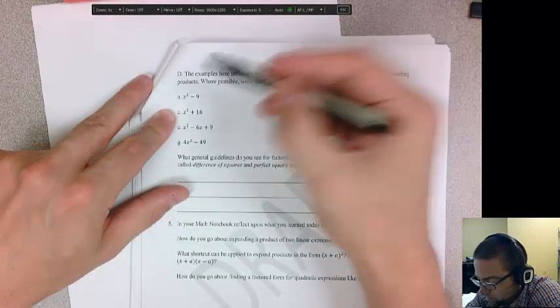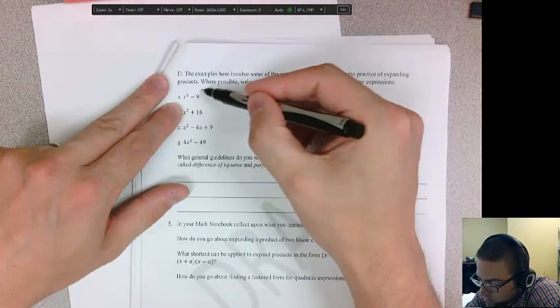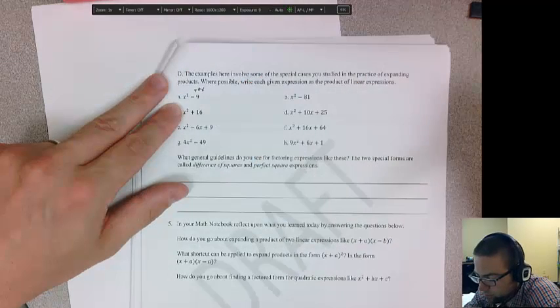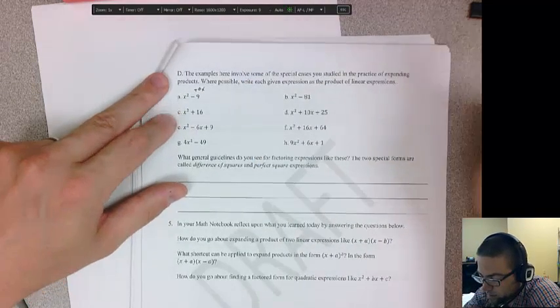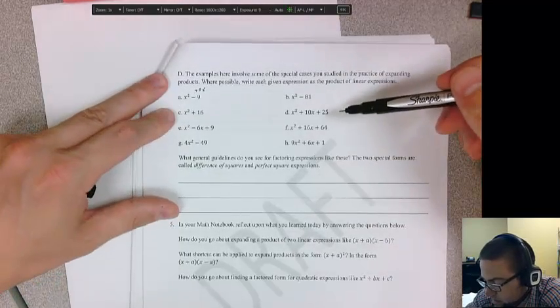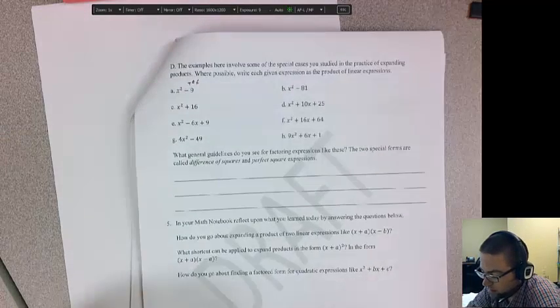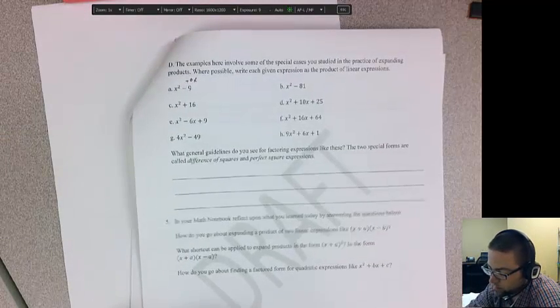Then we have some differences where it's these. You can pretend that there's like plus 0x's in between. Plus 0x's. So that's kind of your middle term. And go ahead and answer the stuff in your notebook. There you go.